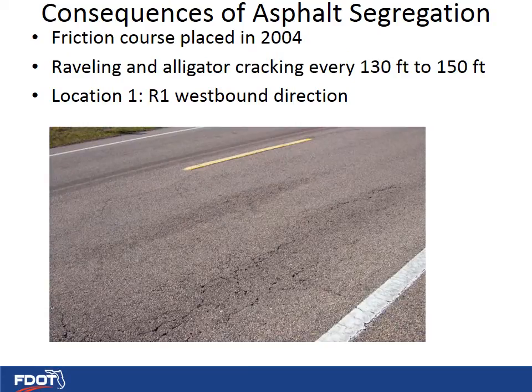Here is an example on State Road 64 west of Wachula, where asphalt segregation has caused premature pavement failures. This pavement was constructed in 2004 and its main problem is a pattern of localized failures occurring approximately every 130 to 150 feet. These failures are attributed to a type of segregation called end-of-load segregation, which typically occurs due to improper paving operations between truckloads during its construction.